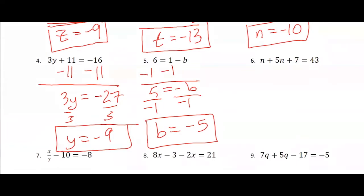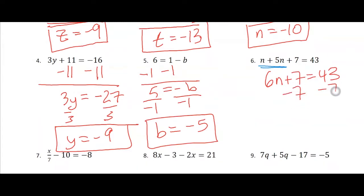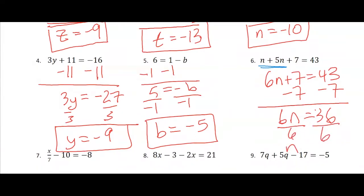Number 6, we've got to combine like terms — make sure that you combine the n and the 5n. That will give me 6n plus 7 equals 43. Subtract 7 on both sides — that's 43 minus 7 equals 36. Divide by 6 on both sides and you get 6.